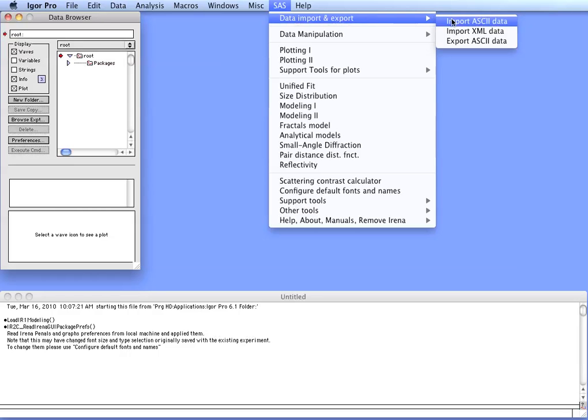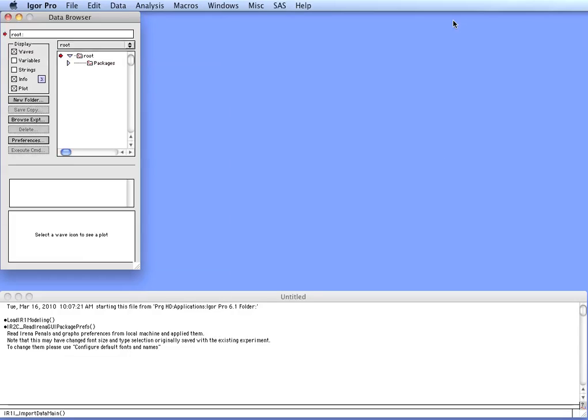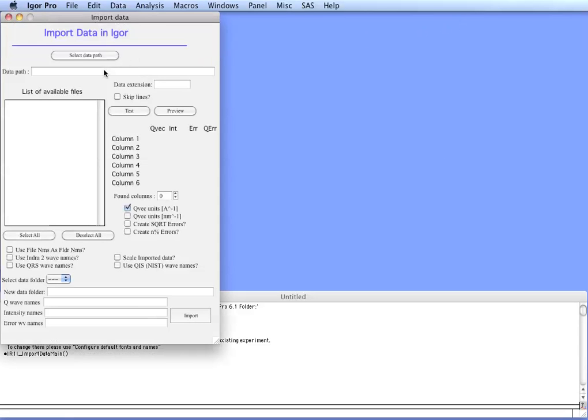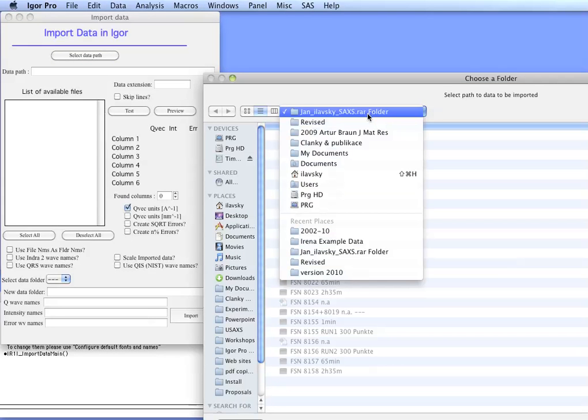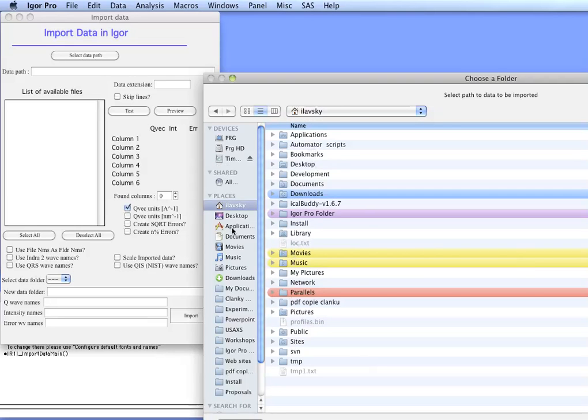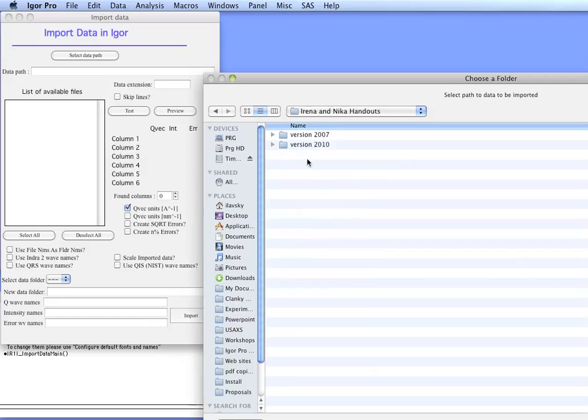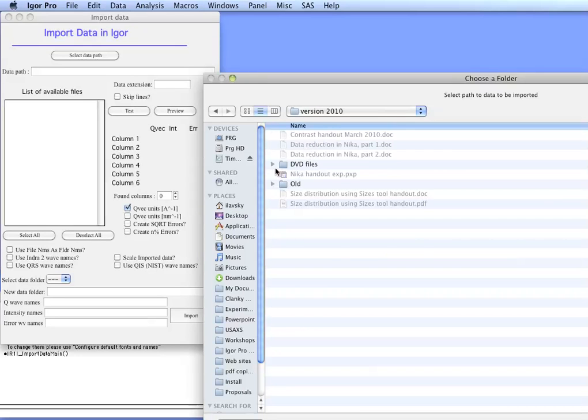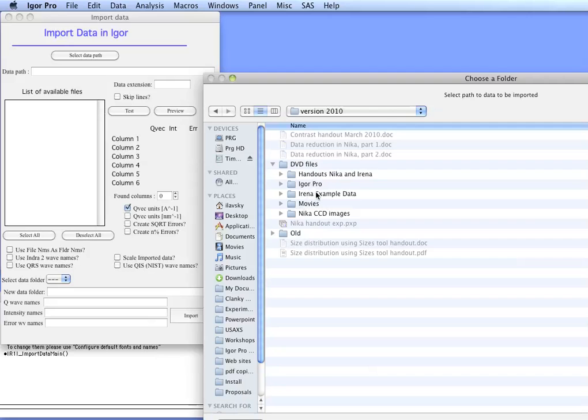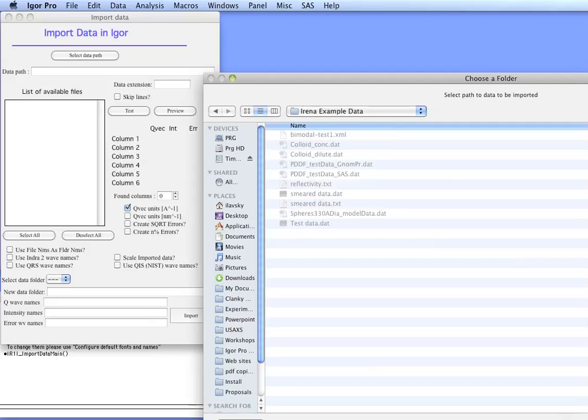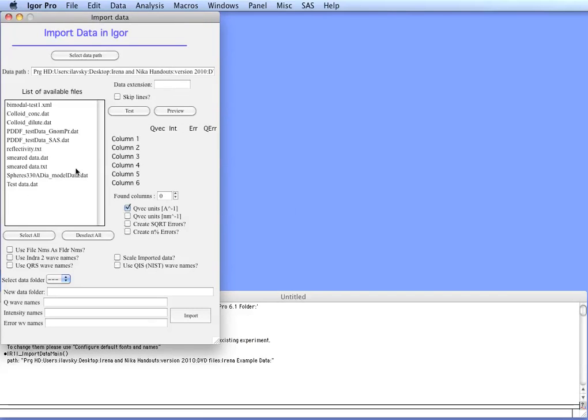First we have to get the data inside Igor, so we can take data import and export and import the ASCII data. We get an import data tool and here we select the data bar. In our specific case we have the data located on the desktop in handouts 2010. Here are example data. These should be included or can be downloaded from the web. In our case we are looking for test data.dat.